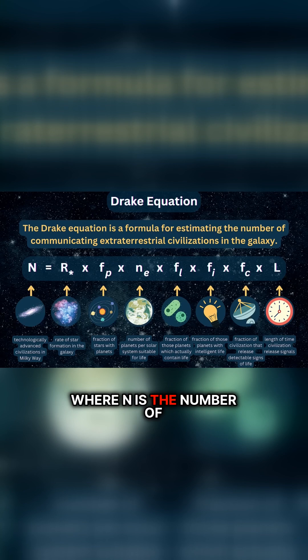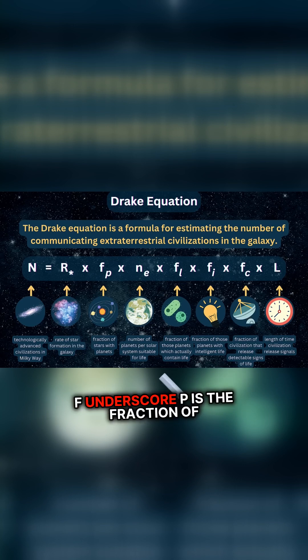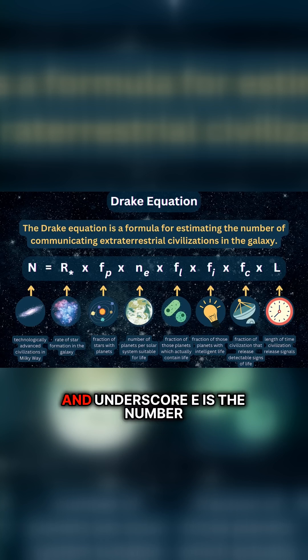Where N is the number of civilizations in our galaxy with which we might communicate. R asterisk is the rate of star formation in the galaxy. F underscore p is the fraction of stars that have planetary systems. N underscore e is the number of planets per star that could potentially support life.